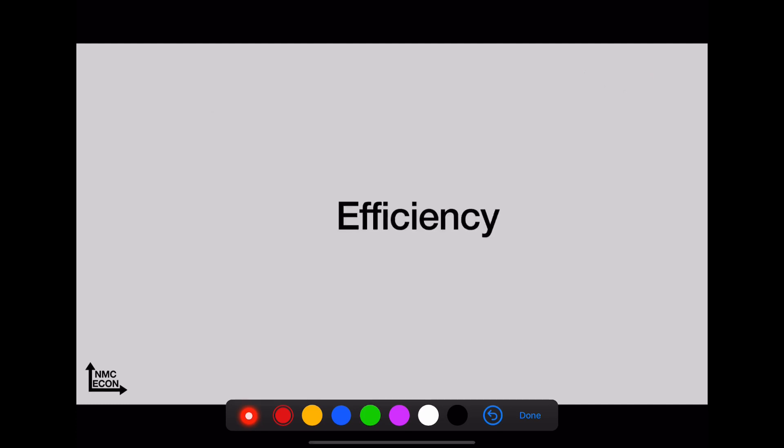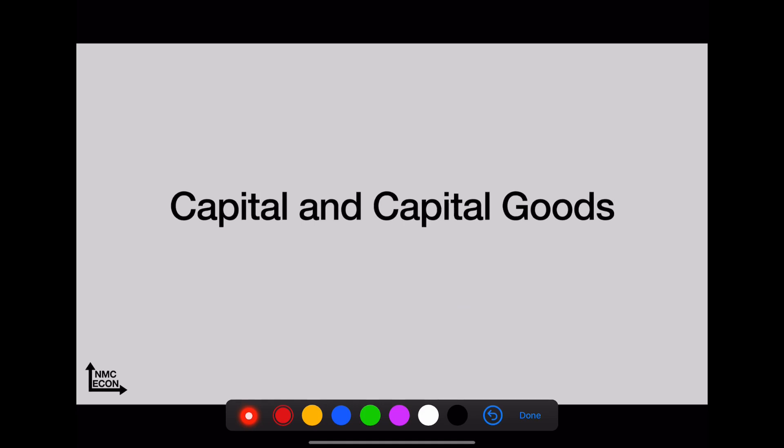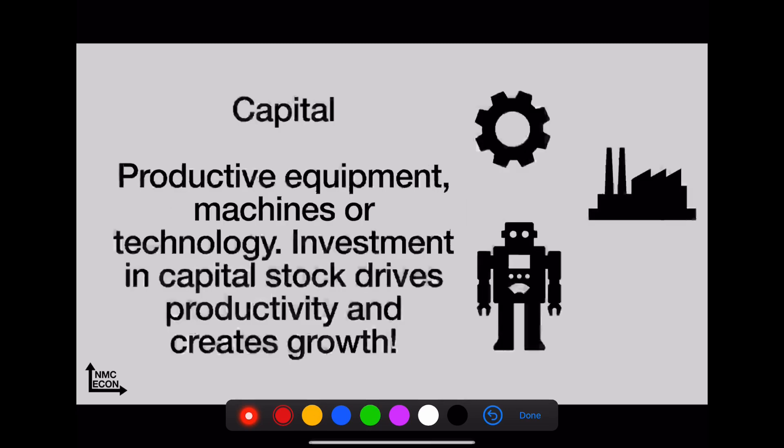Efficiency—this is the goal of economics. There's no way to make anybody better off without making anybody else worse off. However, it's not necessarily fair, it's efficient. Capital and capital goods—big magic words in macroeconomics. Remember this: capital is the productive equipment, machines, or technology. Investments in capital stock drives productivity and it creates growth. Remember that capital stock—this does not mean stocks and bonds, it's productive equipment.